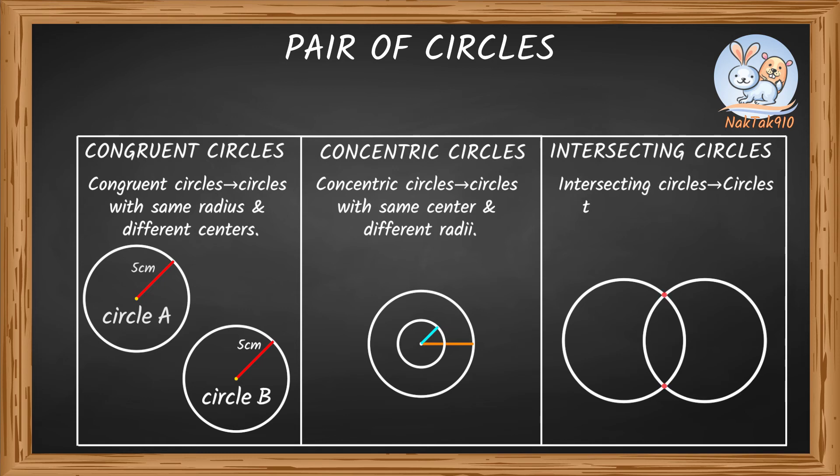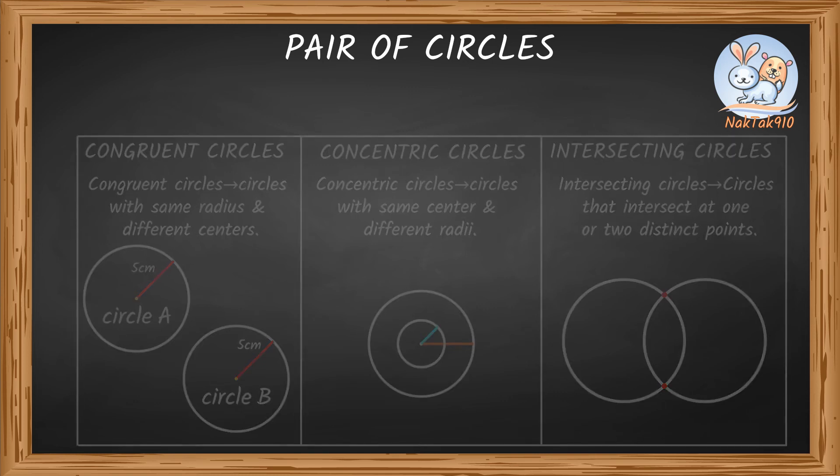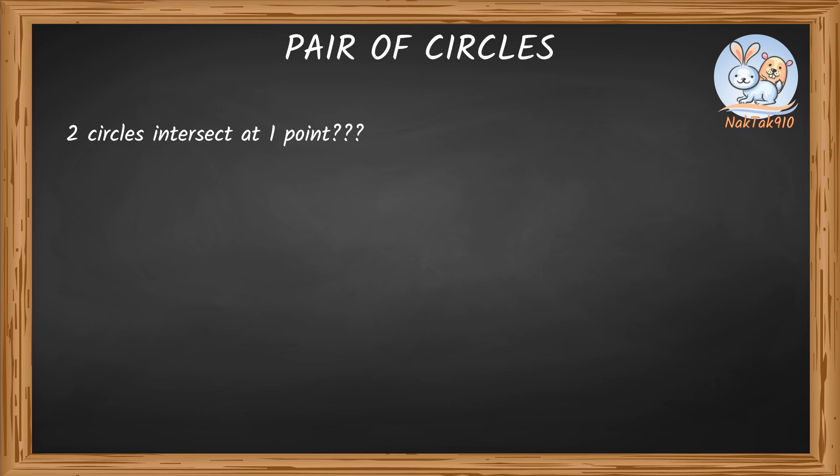That means circles which intersect at one or two distinct points are intersecting circles. But how can two circles intersect at one point? I can only think of two intersecting points. How is that possible?